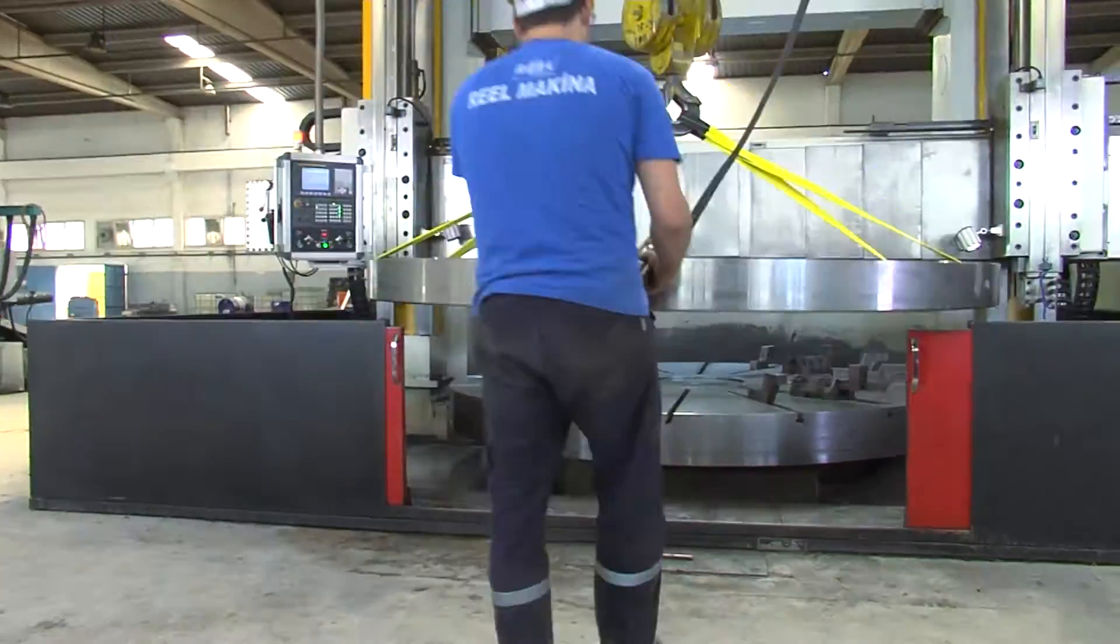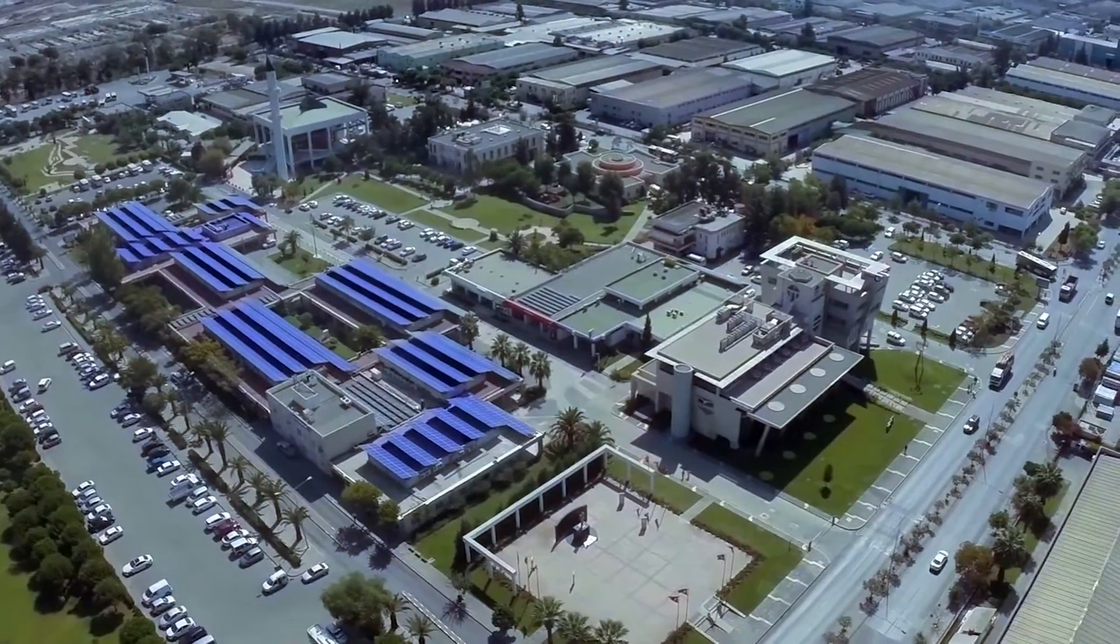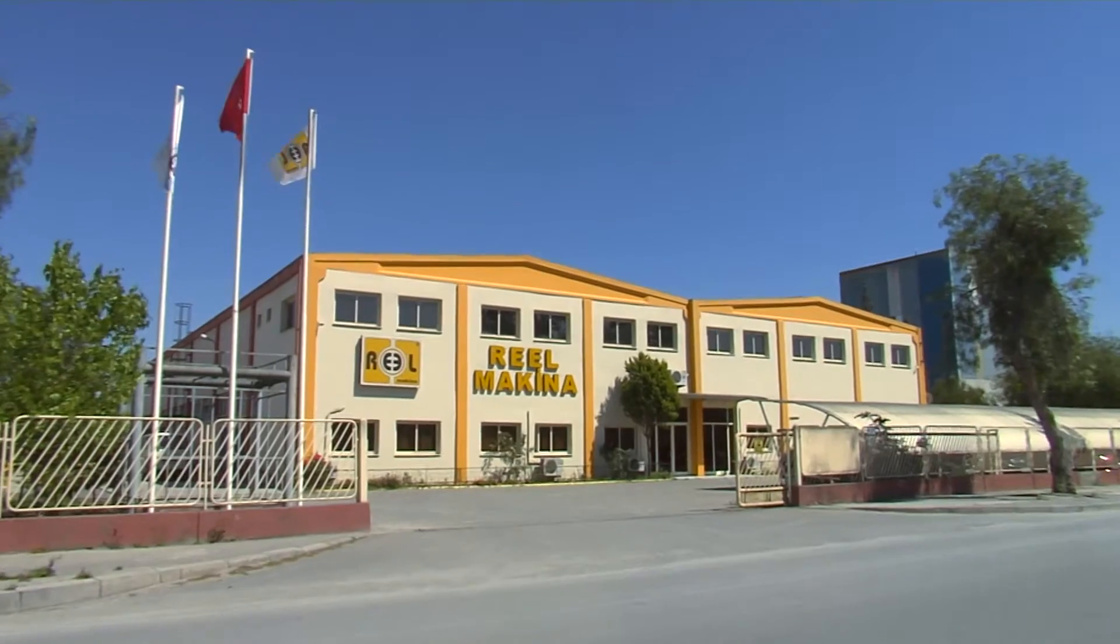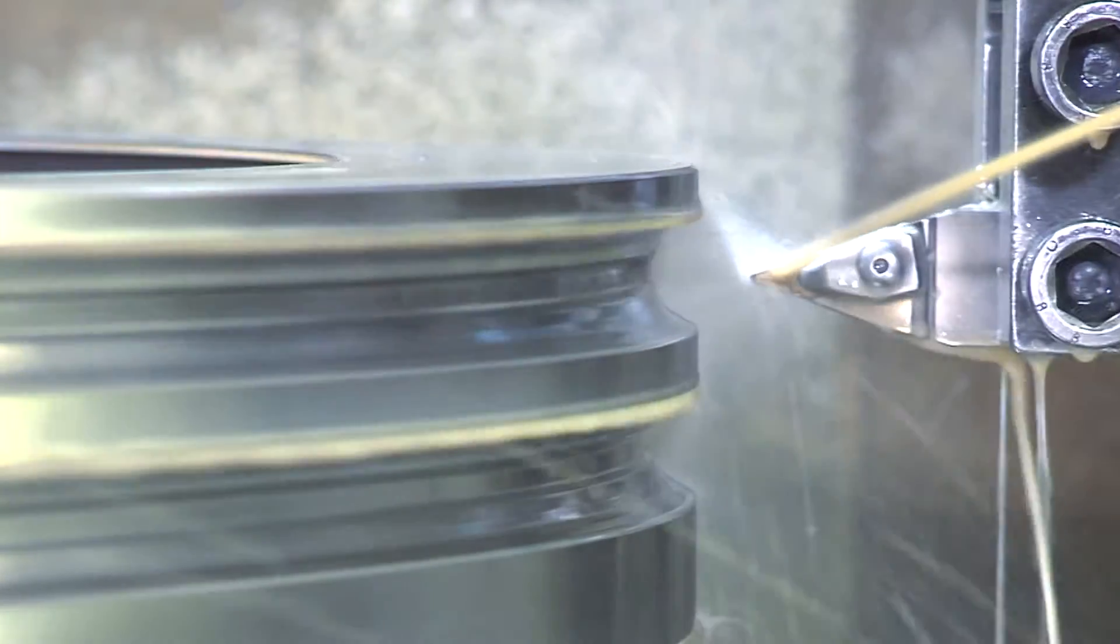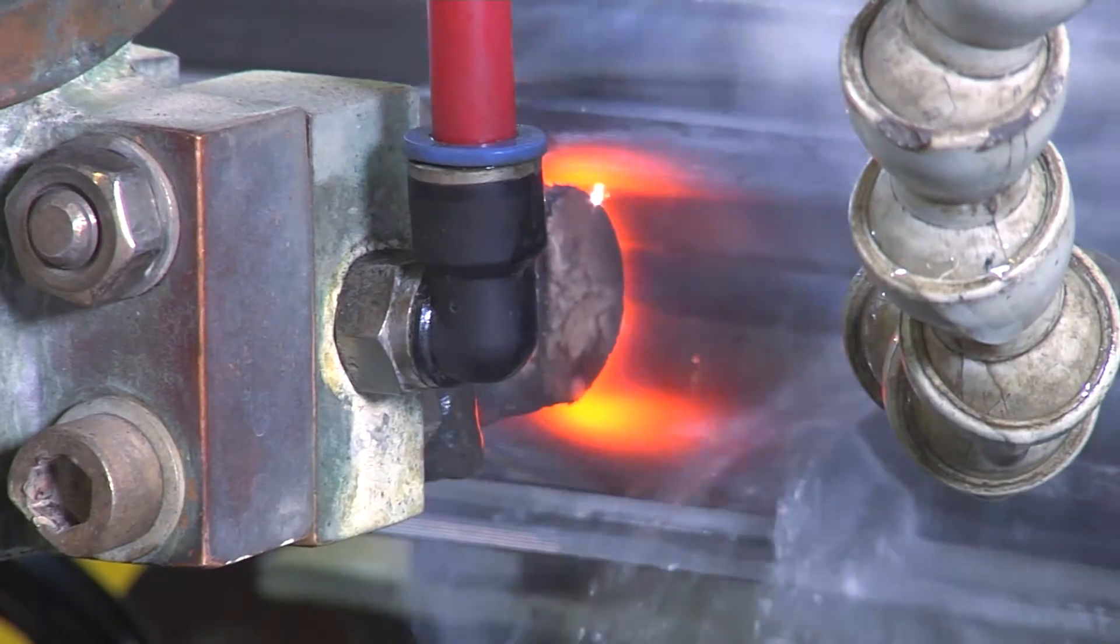Raoul Makina made major investments in this field and carries out its manufacturing processes on its premises with 3,000 square meters of closed and 2,000 square meters of open area, built on a total of 5,000 square meters at the Izmir Ataturk Organized Industrial Zone.